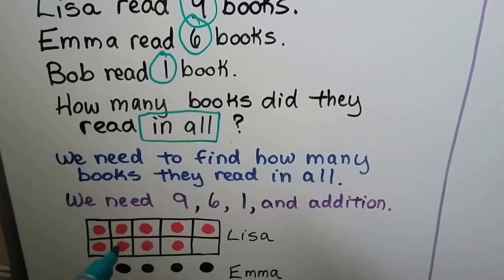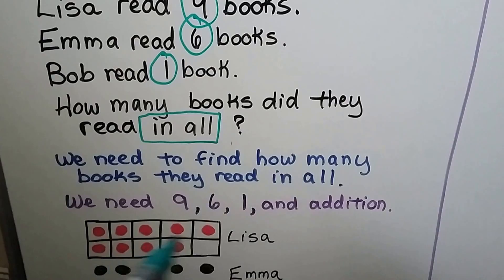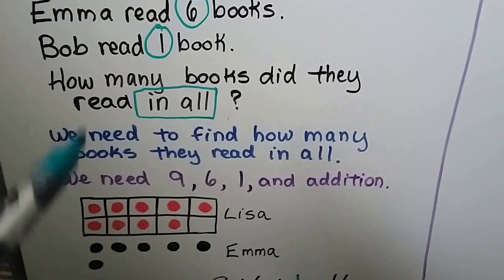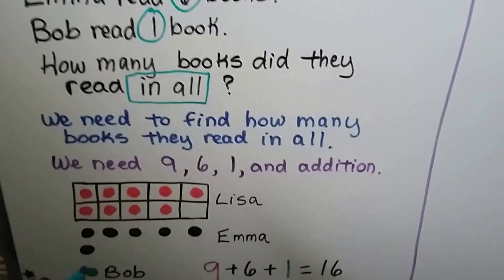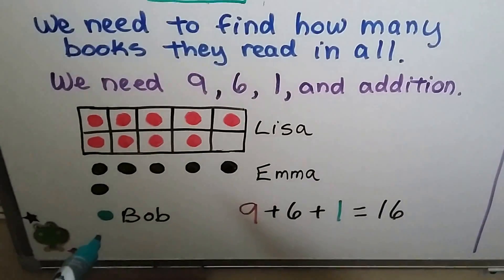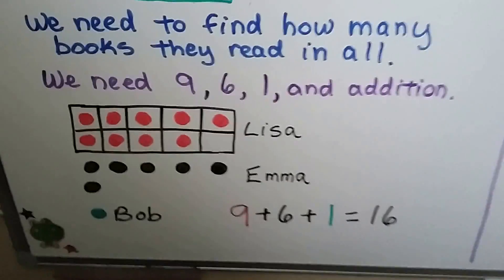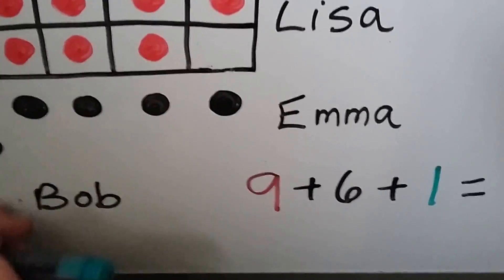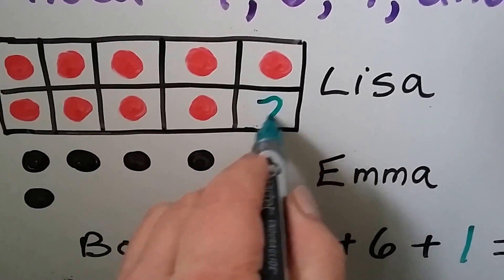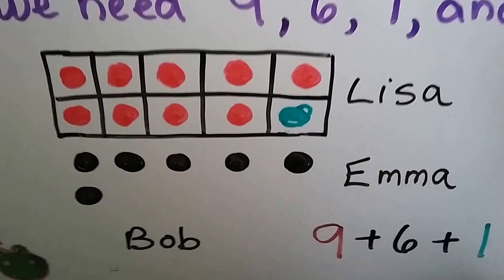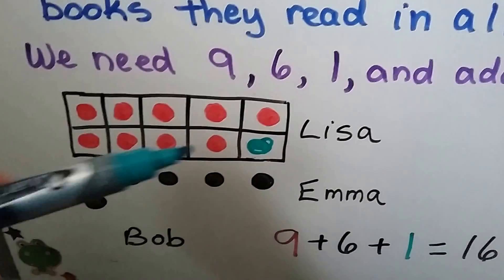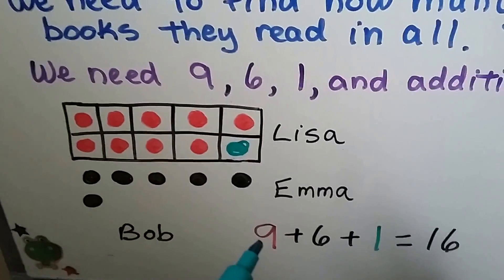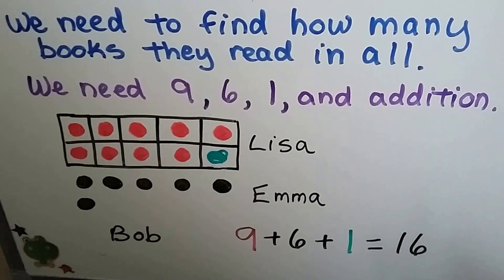We can make nine dots or counters for Lisa's nine books. We can make six dots or counters for Emma's six books. We can make one dot for Bob's one book. We could even move Bob's one dot into the ten frame to make a ten. Now we count: ten, eleven, twelve, thirteen, fourteen, fifteen, sixteen. Nine plus six plus one is equal to sixteen.